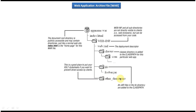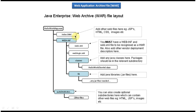Here we can see a Hello World app WAR directory structure. Under the root folder we have index.html, which is the home page for this Hello World application. Under the root folder we can also put HTML, CSS, images, and JSP files. You can create separate directories — for example, a JSP directory for JSP files, an HTML directory for HTML files, a CSS directory for CSS files, and an images folder for images.